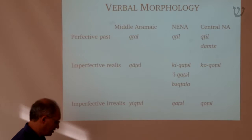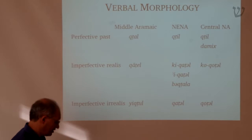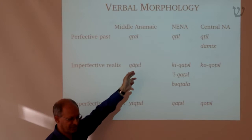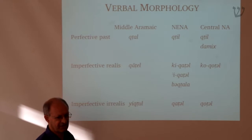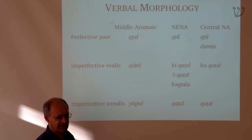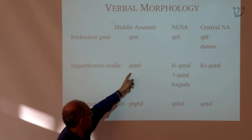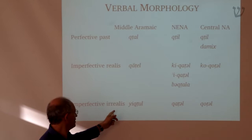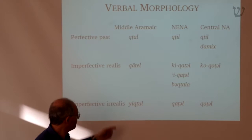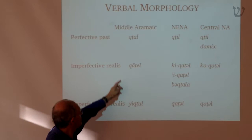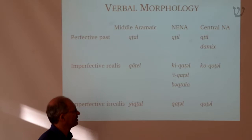If we take what we can call Middle Aramaic — we're talking about early Aramaic of the period of Syriac or Jewish-Palestinian Aramaic — we could distinguish three forms: the perfective past 'katal', an imperfective realis which is a participle 'khartel', and an imperfective irrealis 'yikhtul' — irrealis essentially means subjunctive. What happens in NENA is that the 'katal' and the 'yikhtul' have disappeared, and also in Turoyo.